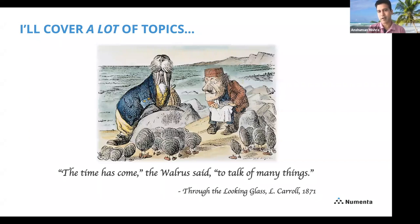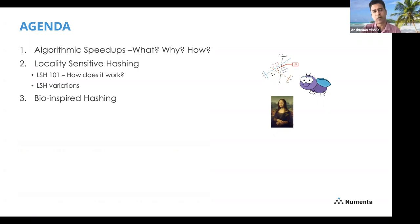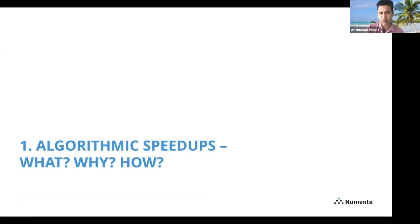I'm going to cover a lot of topics. What I want us to be is either the walrus or the carpenter, but not the oyster in this situation — we don't want to be at the receiving end of heavy resource consumption. On the agenda: what are algorithmic speedups, why do we do them, how do we use them, who else is using them? Then I'll pick one specific technique called locality sensitive hashing, talk about how it works, and the different variations — a good segue into bio-inspired hashing, which was the original topic Jeff asked me to look at and kickstart discussions around.